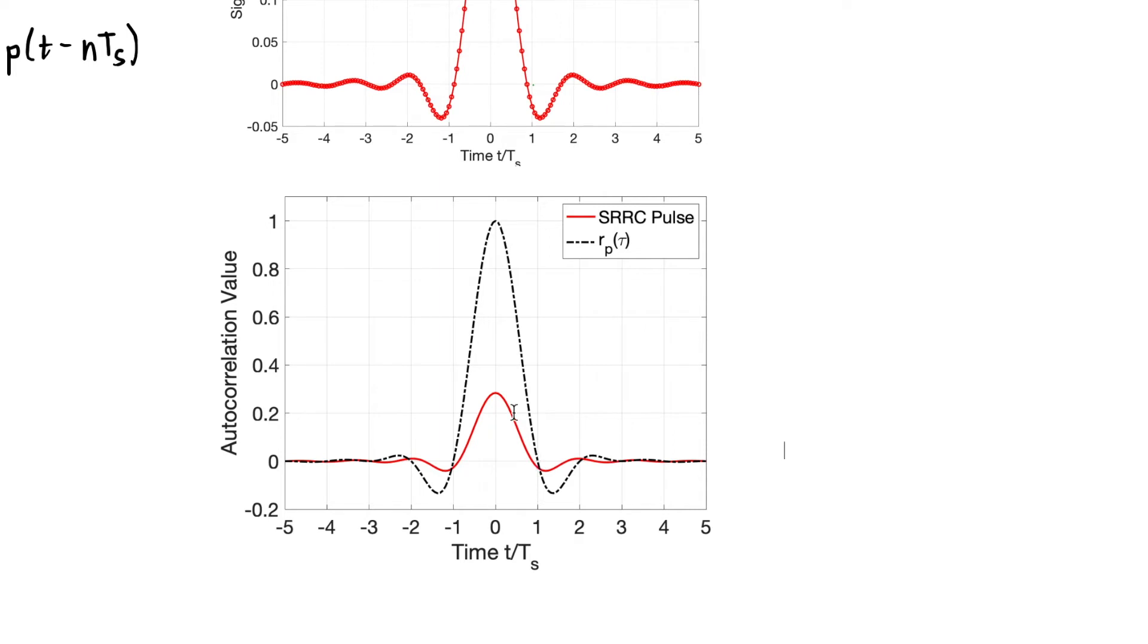At time T sub s, that's when I get a value of exactly 0. And I get a value of exactly 0 at 2 times T sub s and 3 times T sub s. So that's the property of the square root raised cosine pulse shape. Its autocorrelation function takes a 0 value every multiple of T sub s. And this is because it meets the Nyquist filtering criterion. That was how we proved that it would take these 0 values every multiple of T sub s.